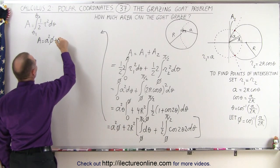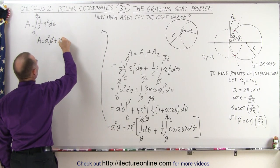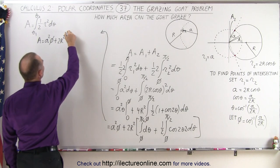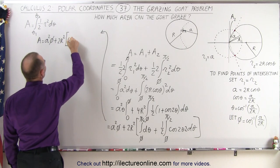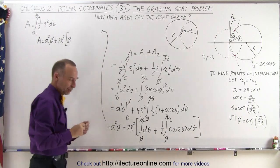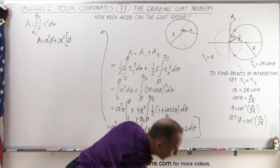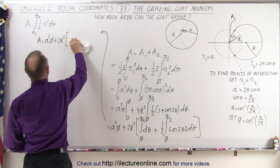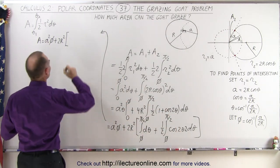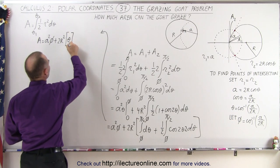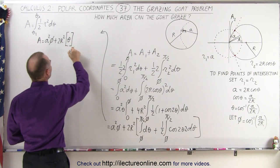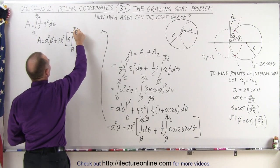Integrating further gives plus 2R squared times θ — since we're integrating over dθ — evaluated from φ to π/2.